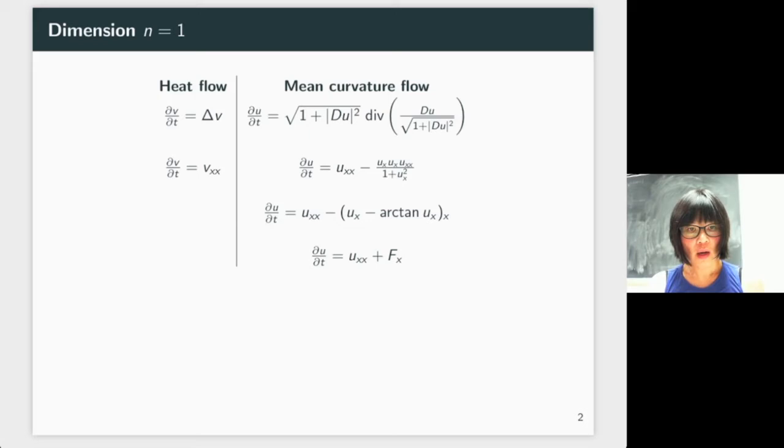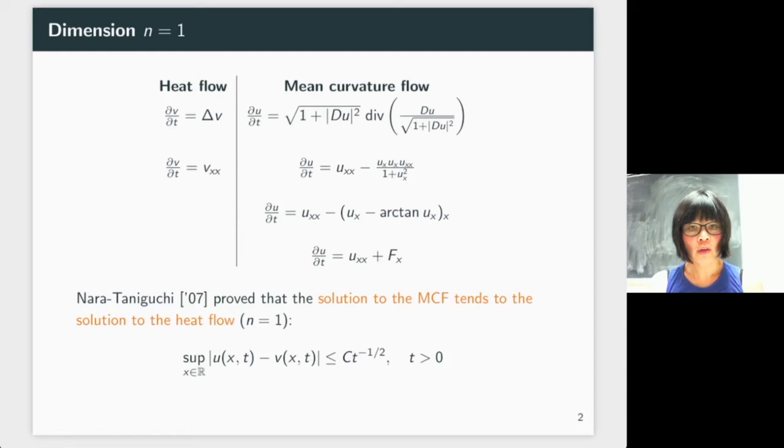In 2007, Nara and Taniguchi proved that the solution to the mean curvature flow tends to the solution to the heat flow. They have the estimate that sup_{x∈ℝ} |U(x,t) - V(x,t)| ≤ C/√t for t > 0. So as t goes to infinity, the right-hand side goes to zero, and U approaches V.